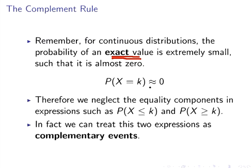This little wavy equal sign here means approximately equal to zero. So therefore we can neglect the equality components in an expression such as this. So the probability of X less than or equal to k and the probability of X greater than or equal to k. The equality component is this little horizontal line here, and in some cases it's parallel to one of the bars, but it says less than or equal to or greater than or equal to.